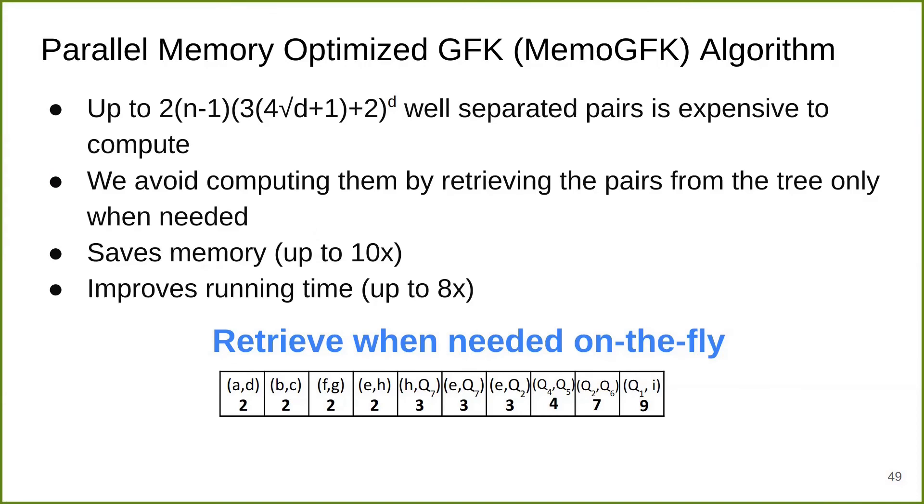We also design a memory optimization for the parallel GFK algorithm. Remember that at the start of the algorithm, we first have to compute this WSPD, which involves a huge number of well-separated pairs. We can avoid computing them by retrieving each of the pairs from the fair split tree directly only when necessary. This saves memory of up to 10x and improves running time of up to 8x.